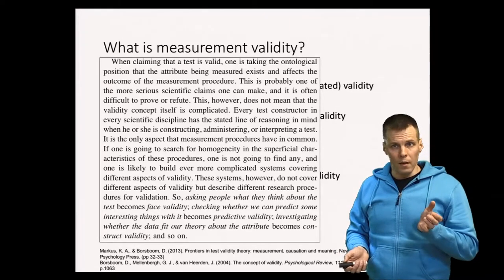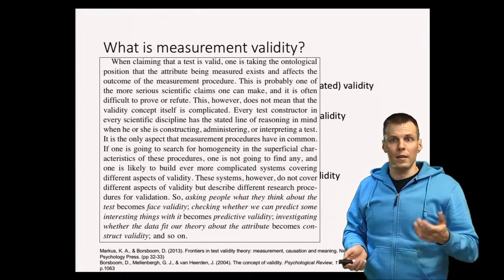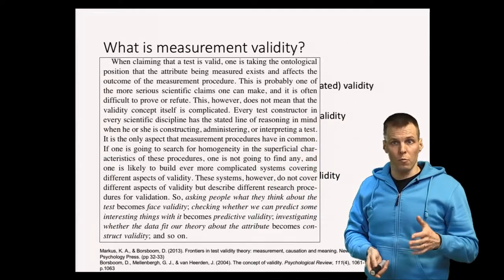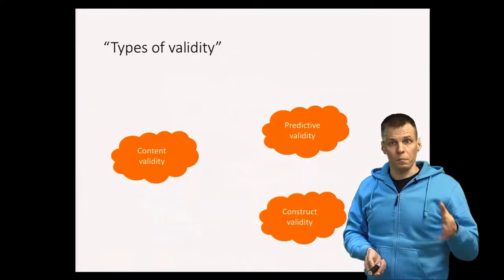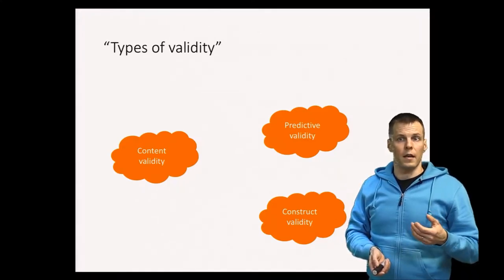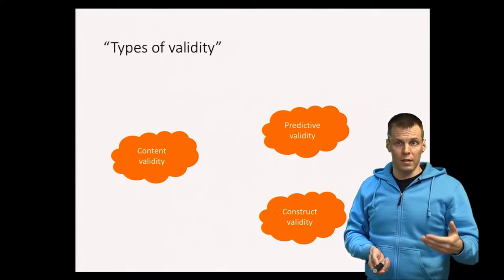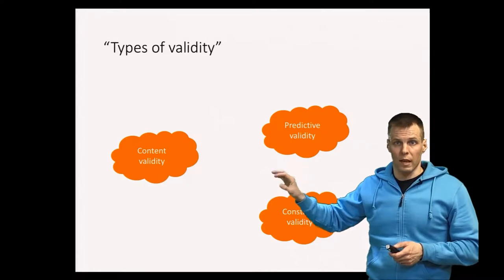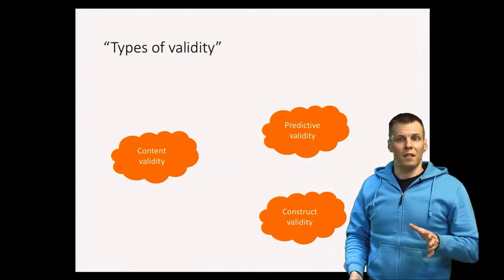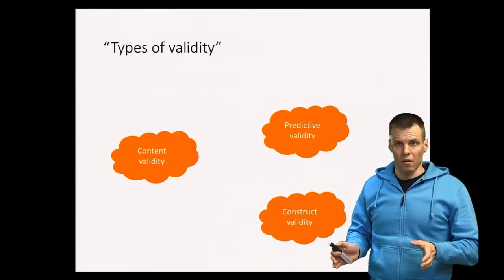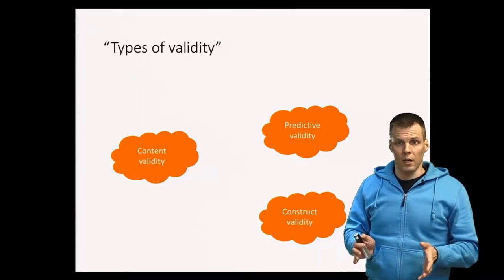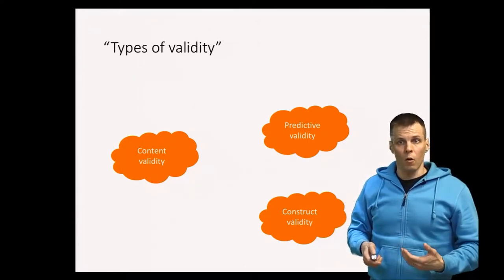So how we argue validity and how we define validity are two different things. If you focus just on the definition of validity, things are much simpler. But there are important terms you need to understand because they are commonly used. I will now explain three of them. These originate from psychometric texts, particularly Nunnally's book from the 1960s, which is commonly cited as a source. The three terms are content validity, predictive validity, and construct validity — are they about validity or validation, and are they competing or complementary concepts?